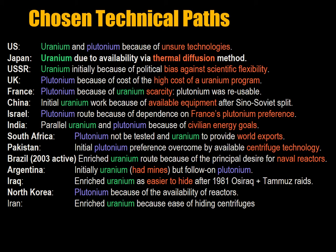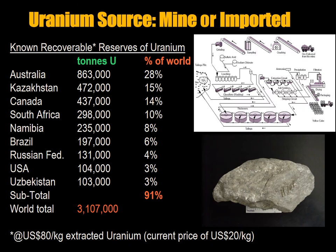Some unknown spies also blew up the Tammuz reactor in France. North Korea pursued the plutonium route because they had availability of reactors, but subsequently got centrifuge technology from Pakistan and also pursued the uranium route. Iran followed the enriched uranium route because it was easier to hide the centrifuges from agencies.